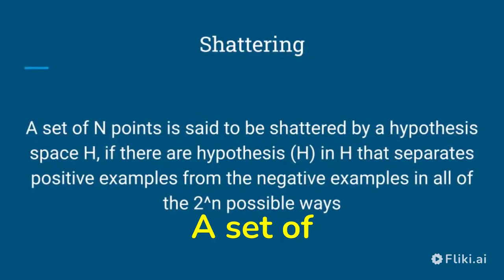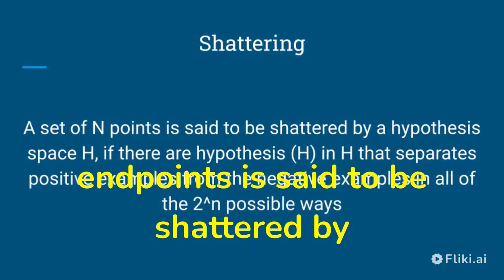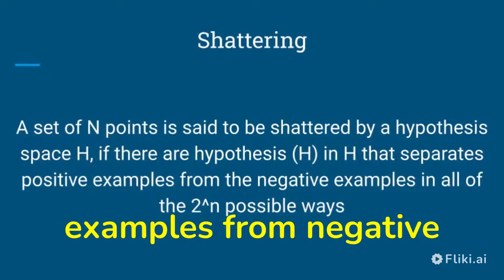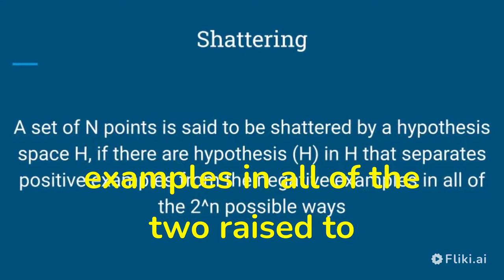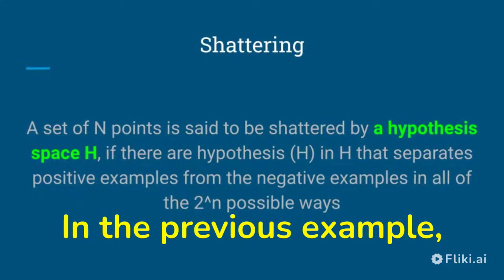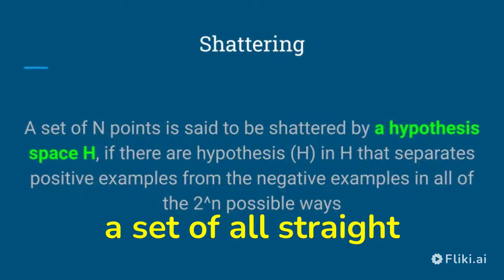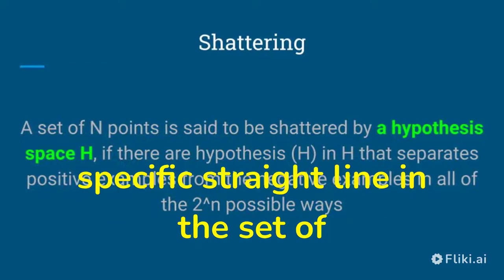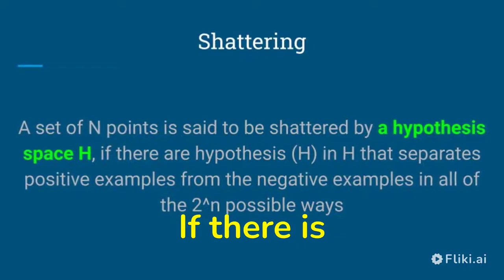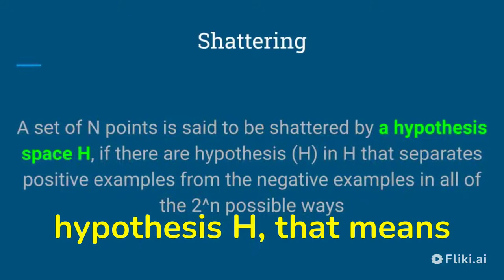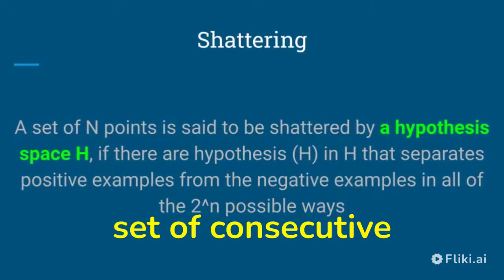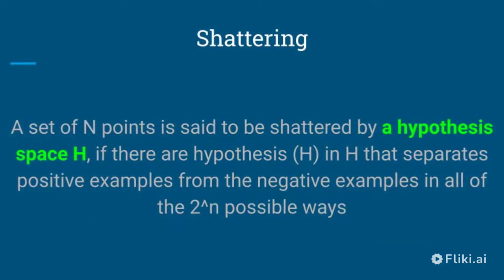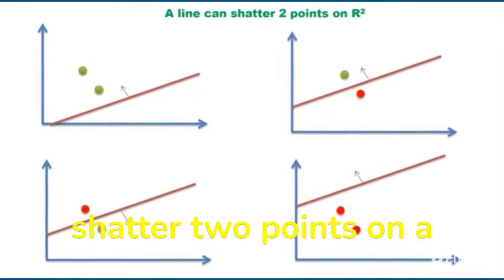In all four cases, we can say that straight lines or linear functions are expressive enough to shatter two points on a two-dimensional plane. What do we mean by shattering? A set of n points is said to be shattered by hypothesis space H if there are hypotheses in H that separate positive examples from negative examples in all of the 2 raised to n possible ways. In the previous example, the hypothesis space is the set of all straight lines in the two-dimensional plane. If there exists a hypothesis — that is, any straight line — that correctly classifies data points in all four possible ways, then a line can shatter two points on a two-dimensional plane.